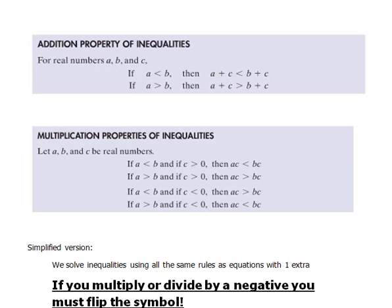We have those same properties when we talk about inequalities. The addition property of inequalities basically says if you've got some number that's less than another, then if you add the same thing to both sides, that inequality is still a true statement. Likewise, if you've got something that is larger than another number, if you add the same thing to both sides, you've still maintained that same balance.